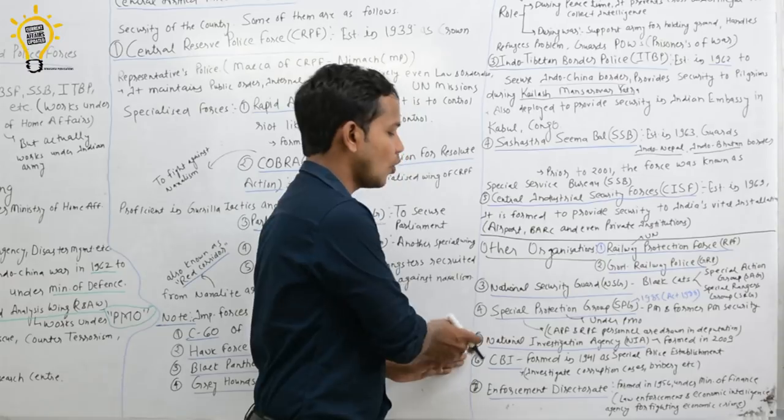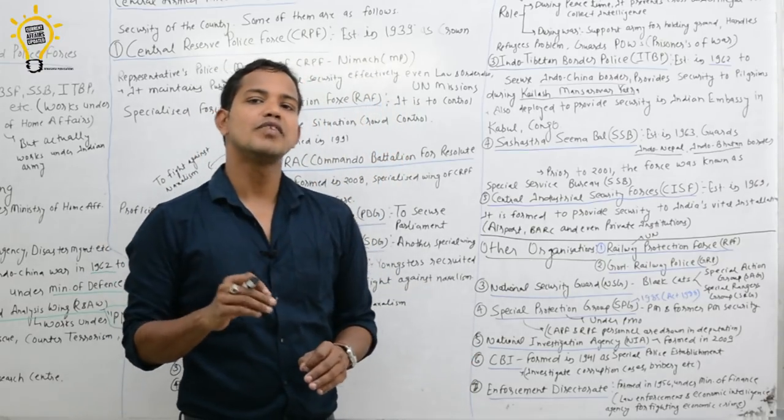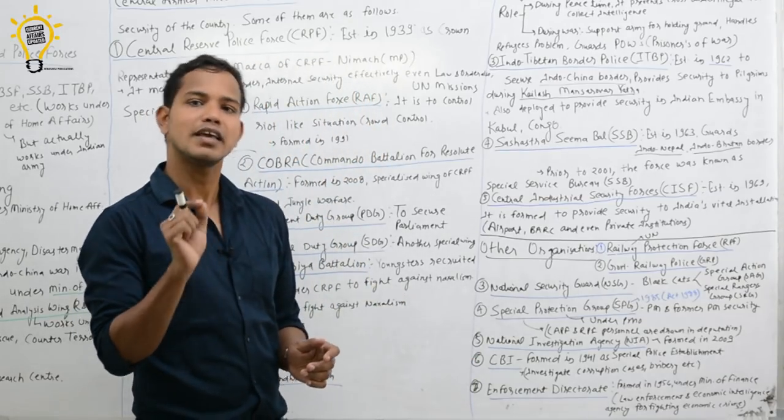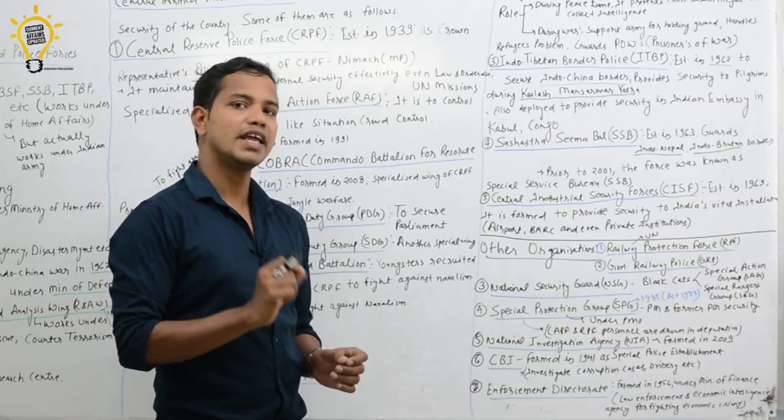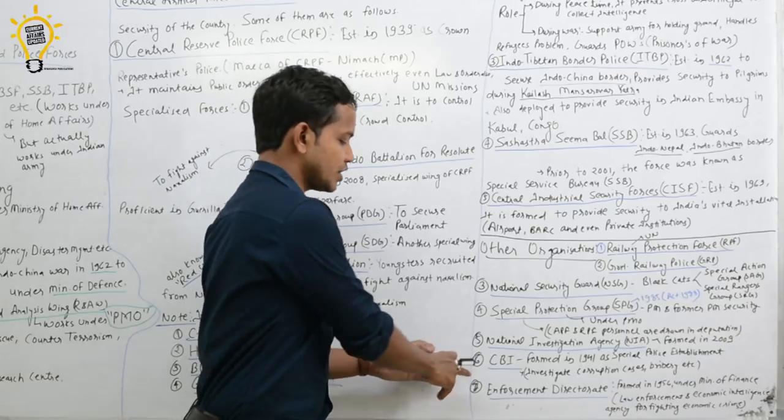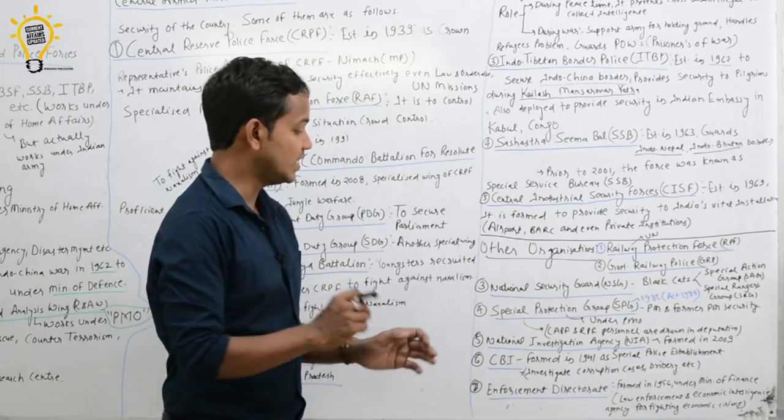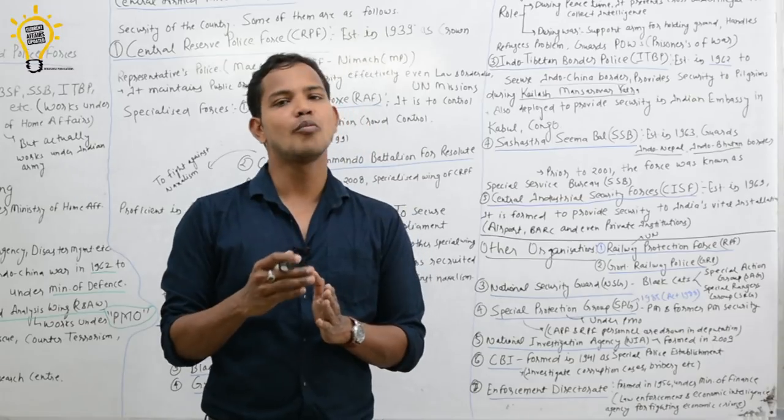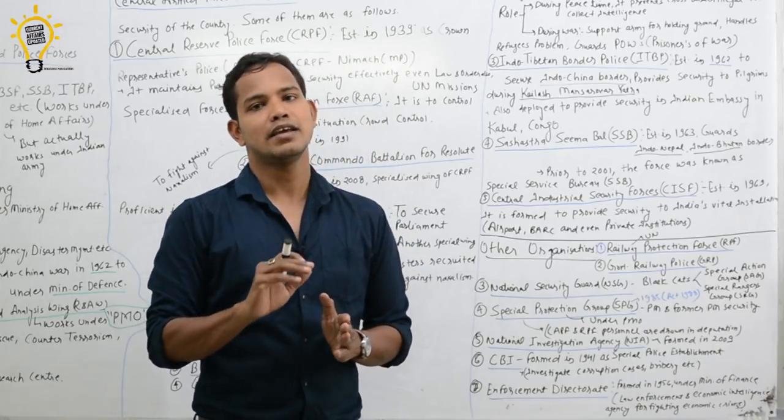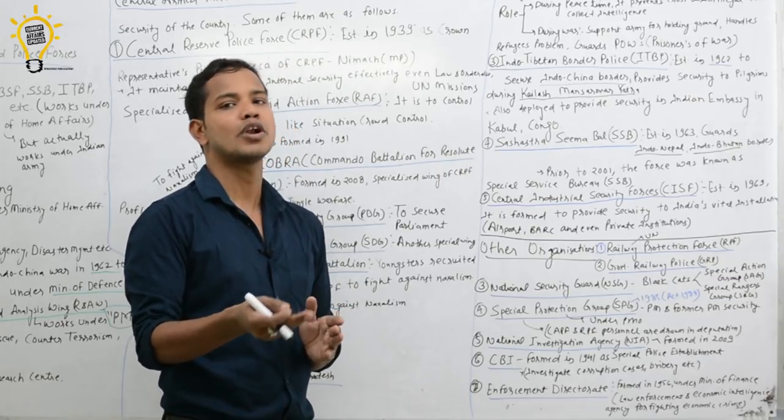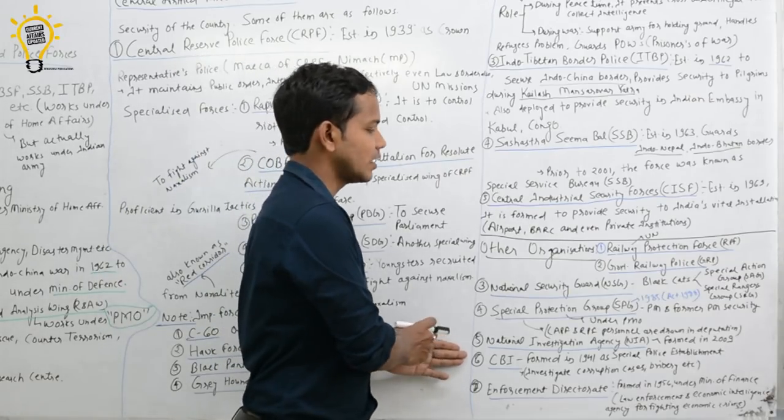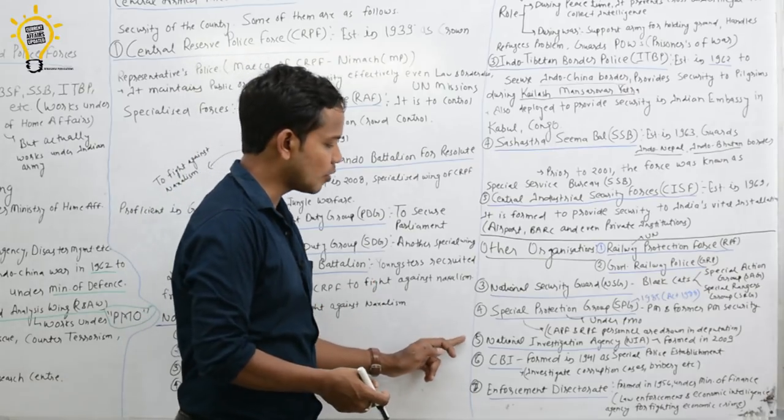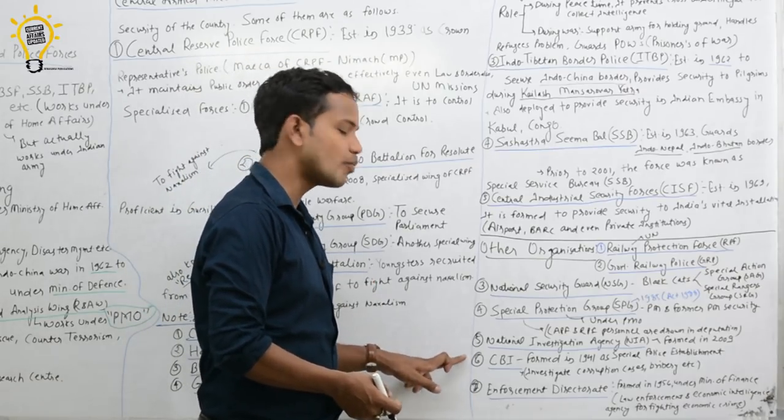Next comes CBI, Central Bureau of Investigation. Created in 1941 under Special Police Establishment. Remember, CBI is neither a constitutional nor a statutory body. It is non-statutory, neither constitutional body nor statutory body. And CBI comes under Ministry of Personnel. CBI can work if state government requests central government, then it can directly handle cases, or by high court order or by Supreme Court order. It can directly handle cases of any state. Main work is corruption cases, bribery cases, different problems CBI solves. But as I told you about NIA, it doesn't need state government's permission. CBI needs to take permission.